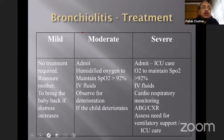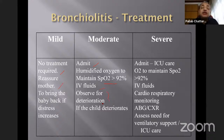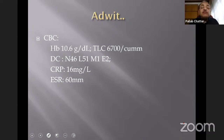Treatment differs by severity, so classification is important. Mild bronchiolitis usually does not need treatment — reassure parents and advise them to return if warning signs appear. Moderate bronchiolitis should be admitted; humidified oxygen is given to keep saturations above 92%; IV fluids may be required if the child is not feeding well. Severe bronchiolitis requires immediate ICU admission with cardiorespiratory monitoring, ABG, chest X-rays, and assessment for ventilatory support.